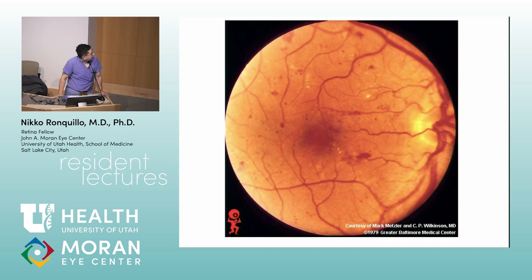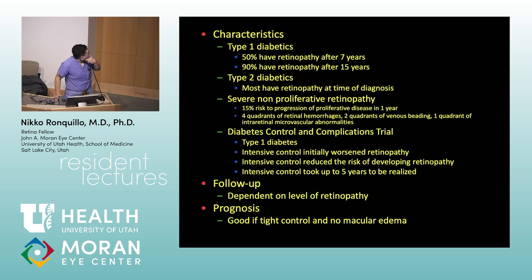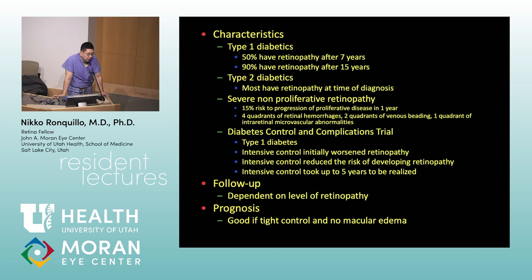Next — non-proliferative diabetic retinopathy. The most important definition: severe NPDR is the 4-2-1 rule — four quadrants of dot-blot hemorrhages, OR two quadrants of venous beading, OR one quadrant of IRMA. Intensive glycemic control decreases the risk of end organ damage.